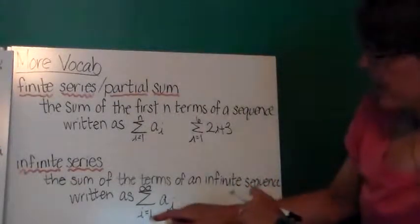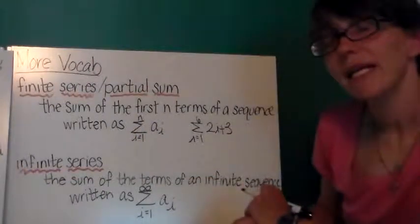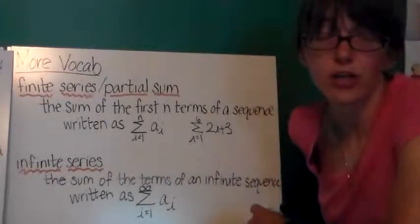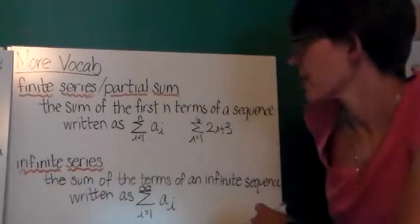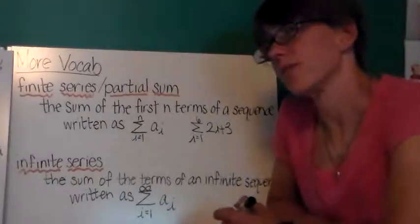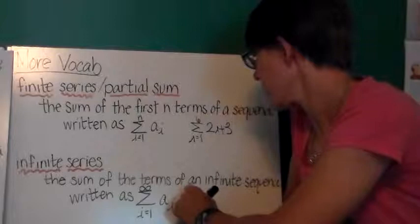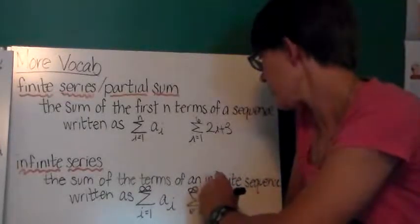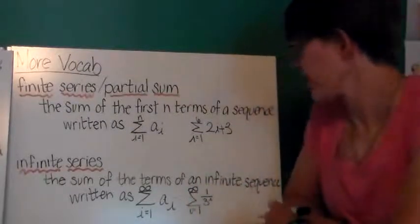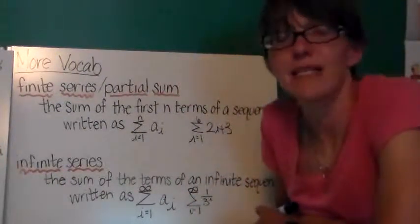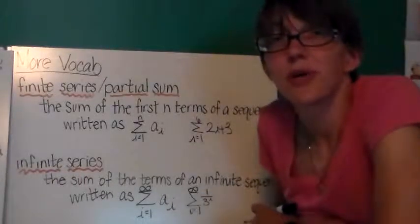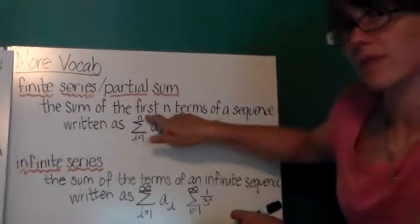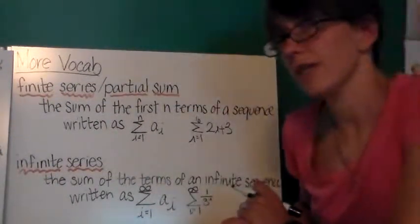Now, we could also have an infinite series. Here, you'll notice I still start at 1, but it ends at infinity. So a lot of times these series diverge. That means that their value just gets larger and larger. But sometimes we can find the sum of the terms of an infinite sequence. An example could look like this: sum from 1 to infinity of 1 over 3 to the i power. So it would be like 1/3 plus 1/9 plus 1/27. You're adding a smaller value each time. So that series will eventually converge to one value.